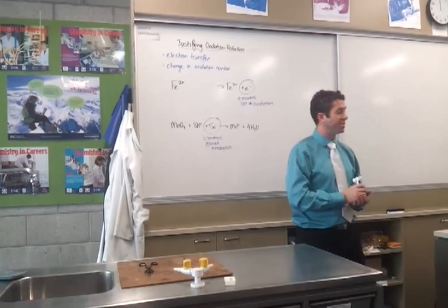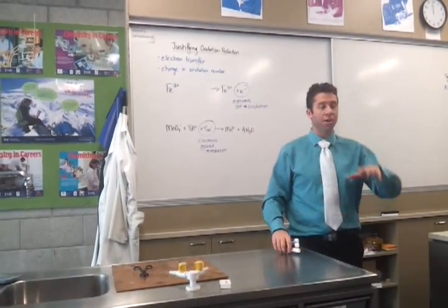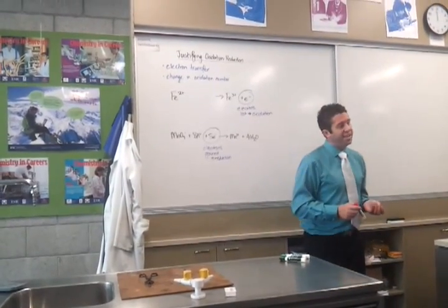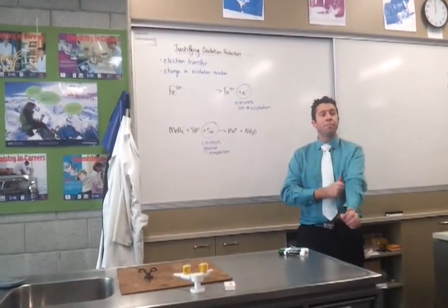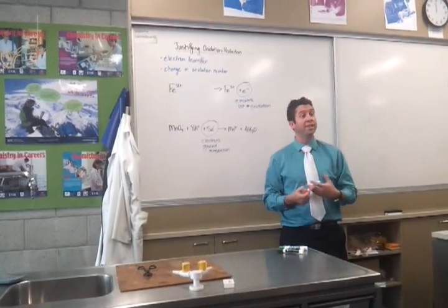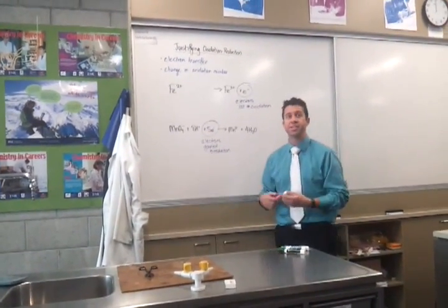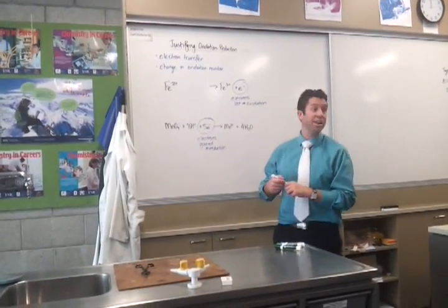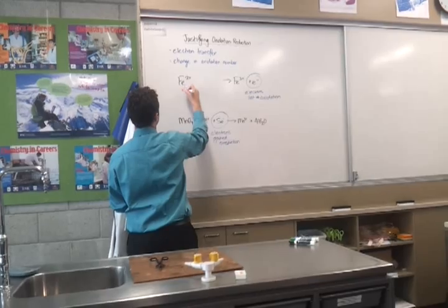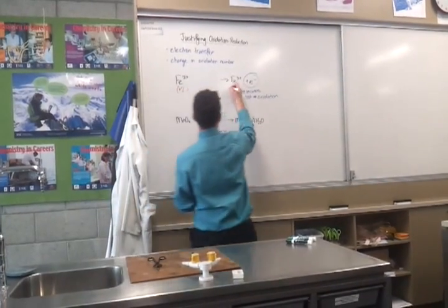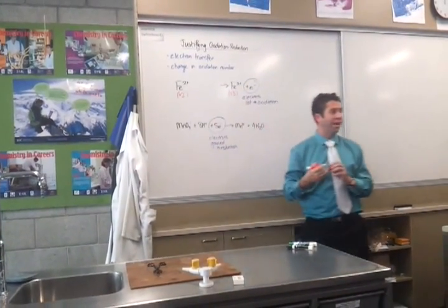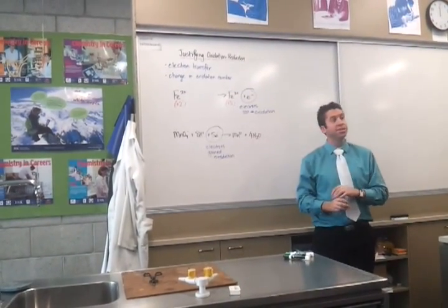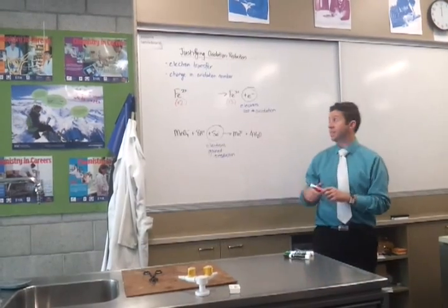The second way is to use oxidation numbers, and that's probably the harder one, so you can be pretty sure you'll have to do this in your internal assessment. The first one should be really easy for working out the oxidation numbers because they're monatomic ions — ions made of only one atom. The rule for this is that the charge of the ion is the oxidation number. So the oxidation number here is plus two, and here plus three. What's happening to that oxidation number? It's increasing. An increase in oxidation number means oxidation.